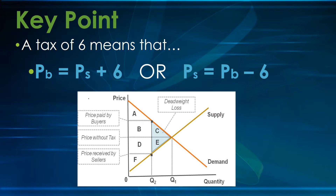Now let's consider when we put the $6 tax on this market. The really important thing to remember when adding taxes to supply and demand equation analysis is that you must keep the price that the buyer pays separate from the price that the seller receives, because those two prices are different. Drawing a graph makes this relationship quite easy to see.